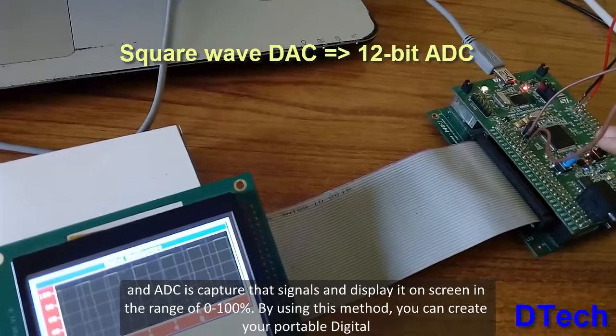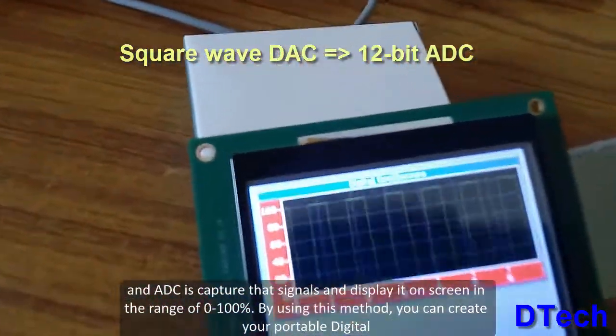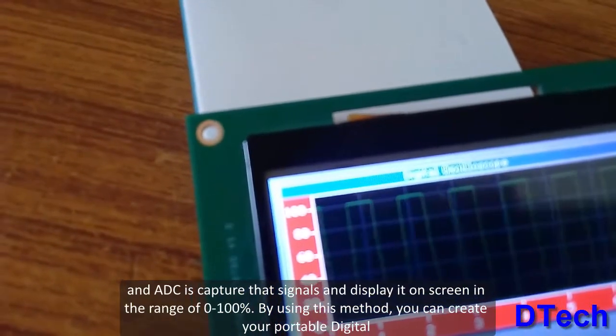The ADC captures that signal and displays it to the screen in the range of 0 to 100.